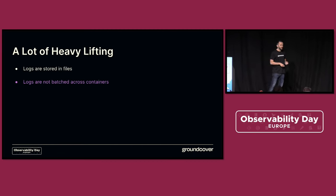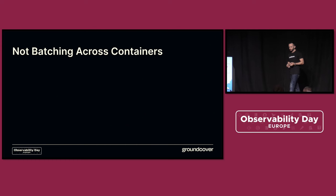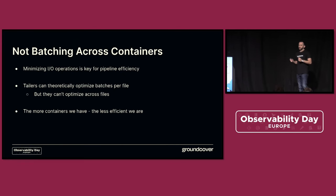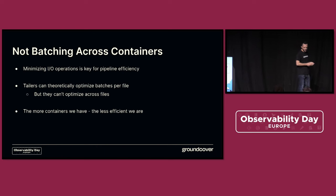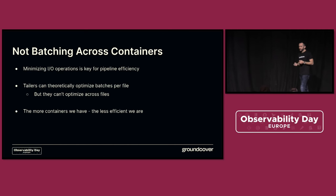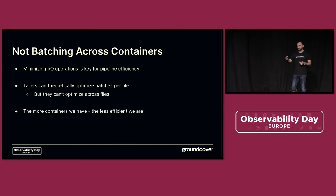The second inefficiency has to do with not batching logs across containers. When optimizing pipeline efficiency, you want to do as much reading as you can every time you perform an I/O operation. Even though you can batch per mailbox — say, waiting until you have a certain number of bytes before doing the read — you can't do that across mailboxes. So if you have more containers, you're actually getting less and less efficient. You have to read from different files and make a lot of syscalls to do that.